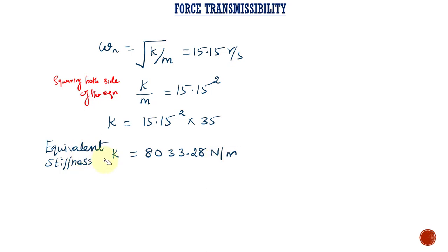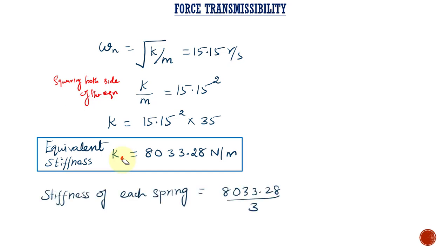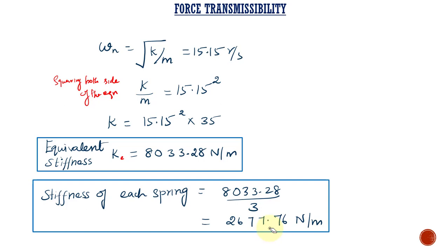This equivalent stiffness corresponds to the three springs supported in parallel. To find the stiffness of each individual spring attached to the refrigerator unit, we divide this value by 3. The stiffness of each individual spring is 2677.76 Newton per meter. Thank you.